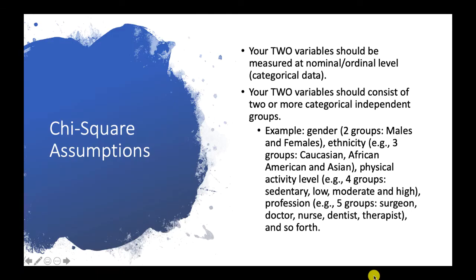Chi-square also has its own assumptions: your variables need to be measured on a categorical scale, and your two variables should consist of two or more categorical independent groups. For example, if you have gender as your variable, you would have one group of females and one group of males — that's already two groups. And if you have ethnicity as your variable, you would have groups such as Malay, Chinese, Indian, or others.